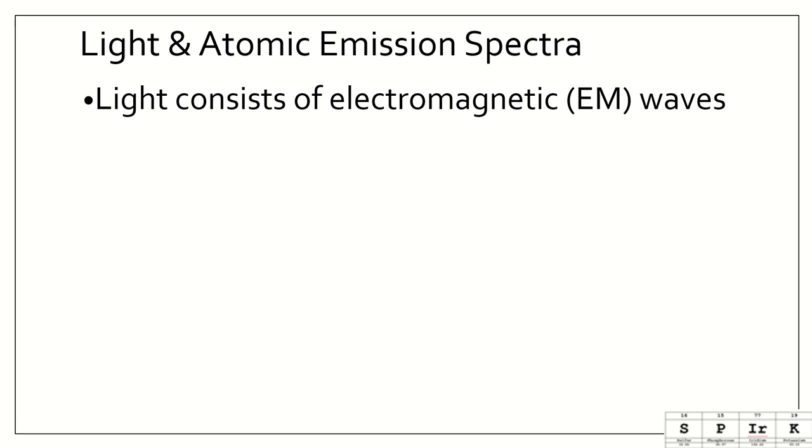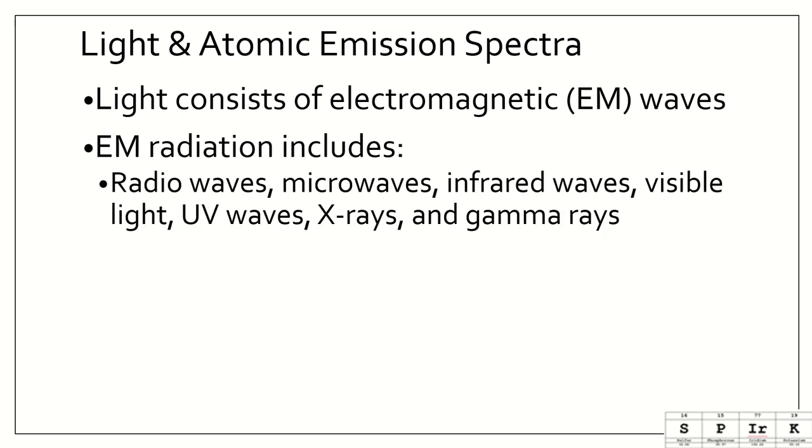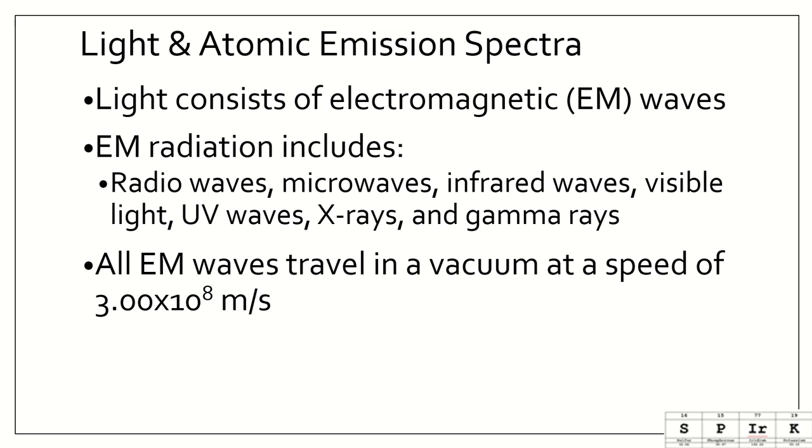Light consists of electromagnetic waves, which we also call EM radiation, or electromagnetic radiation. And that includes things like radio waves, microwaves, infrared waves, visible light, UV waves, X-rays, and gamma rays. And no need to write all of these down. We will discuss them over and over again. And they are in one of the graphics just below on your paper. All electromagnetic waves travel in a vacuum at a speed of 3.00 times 10 to the 8th meters per second, which is the speed of light.